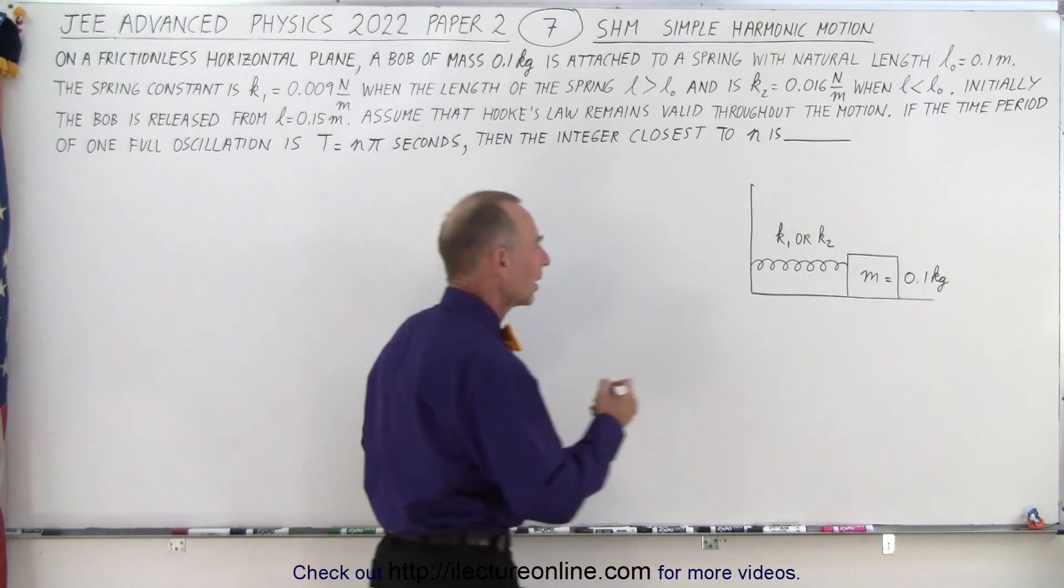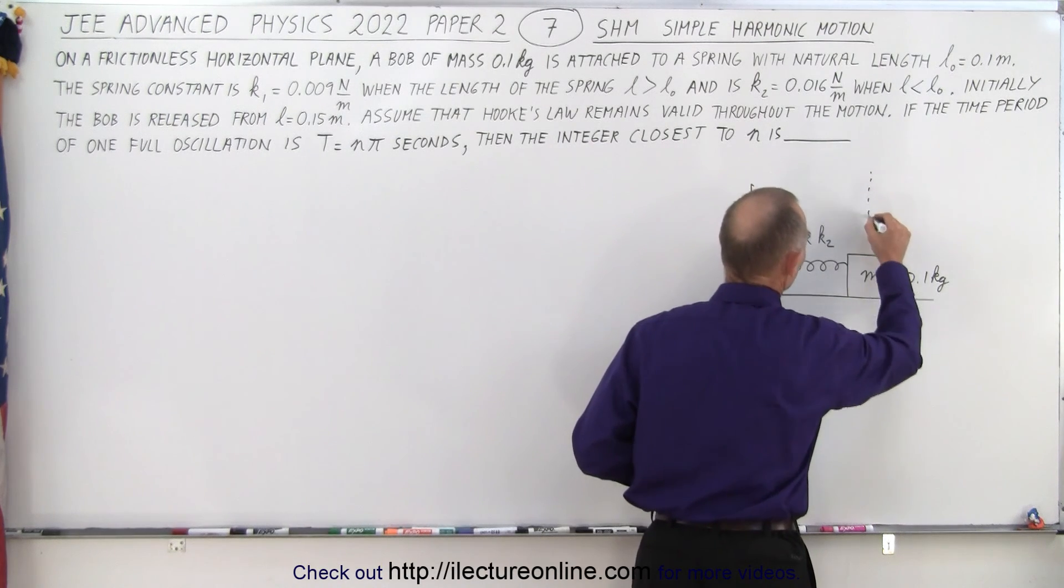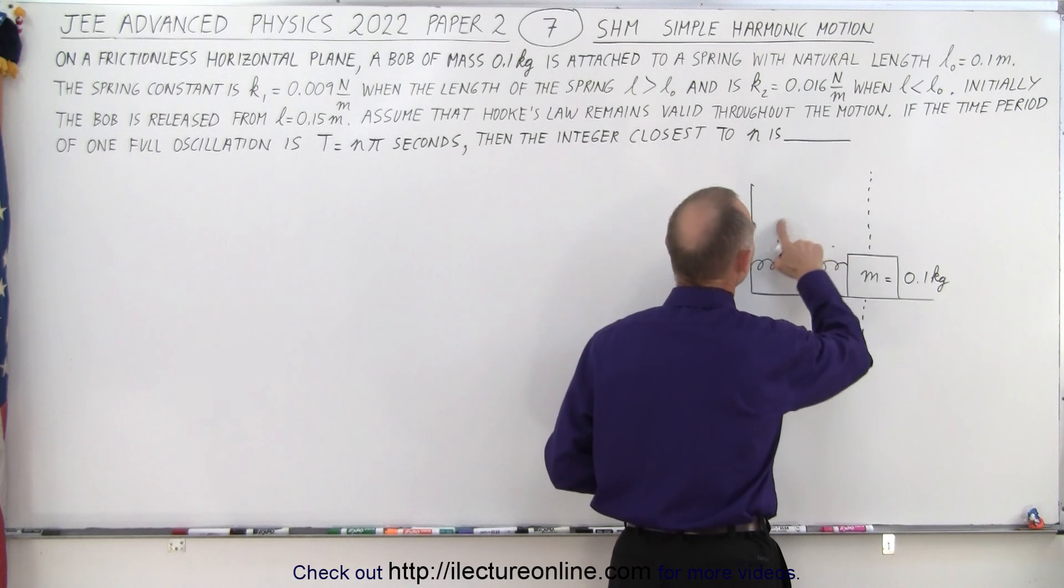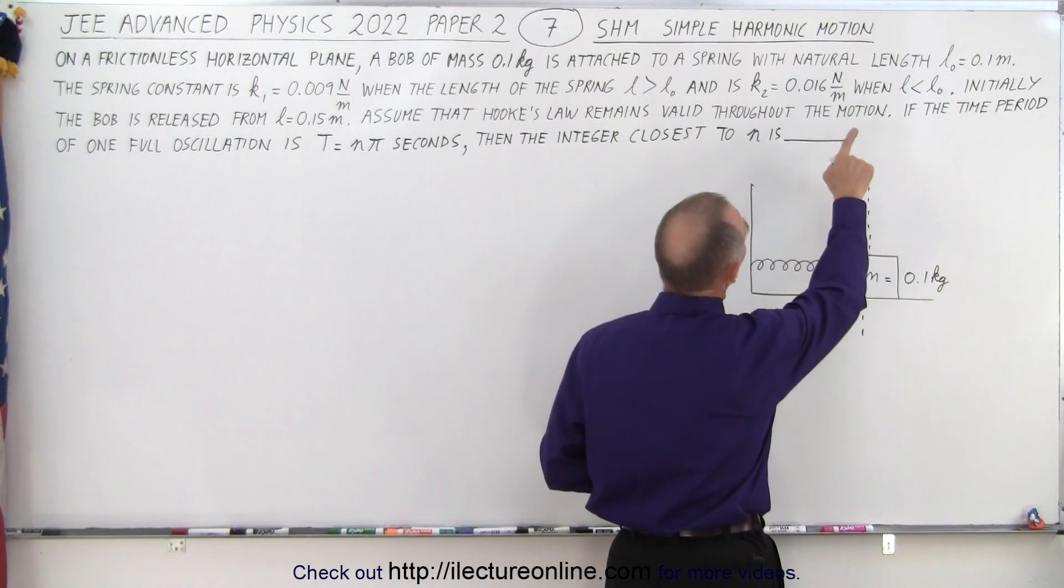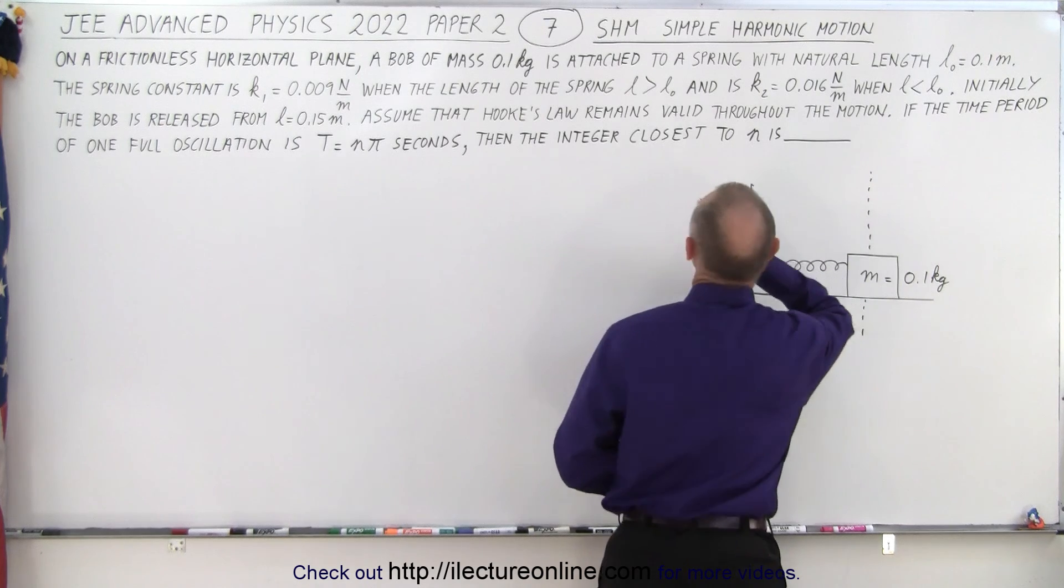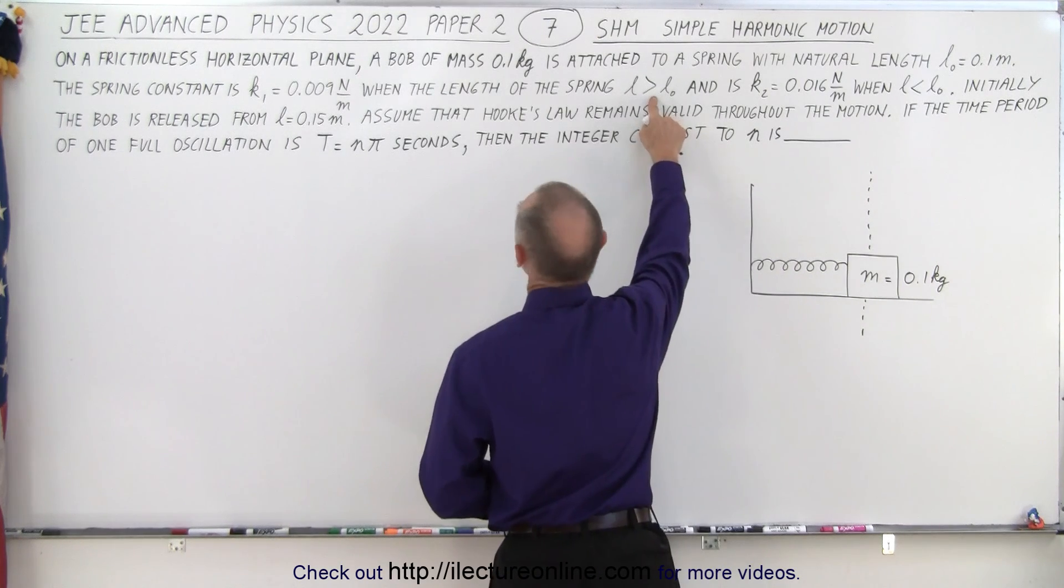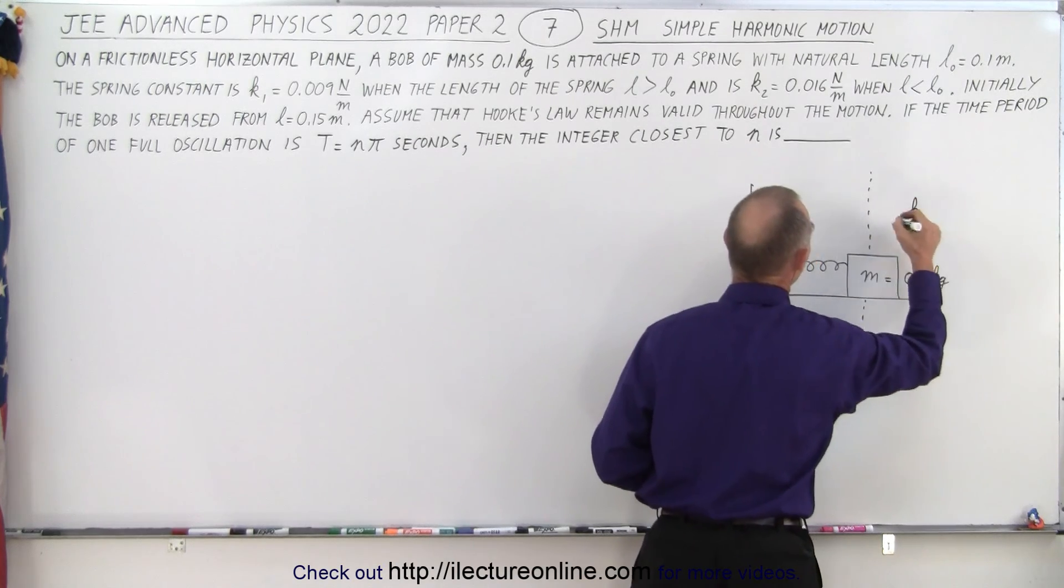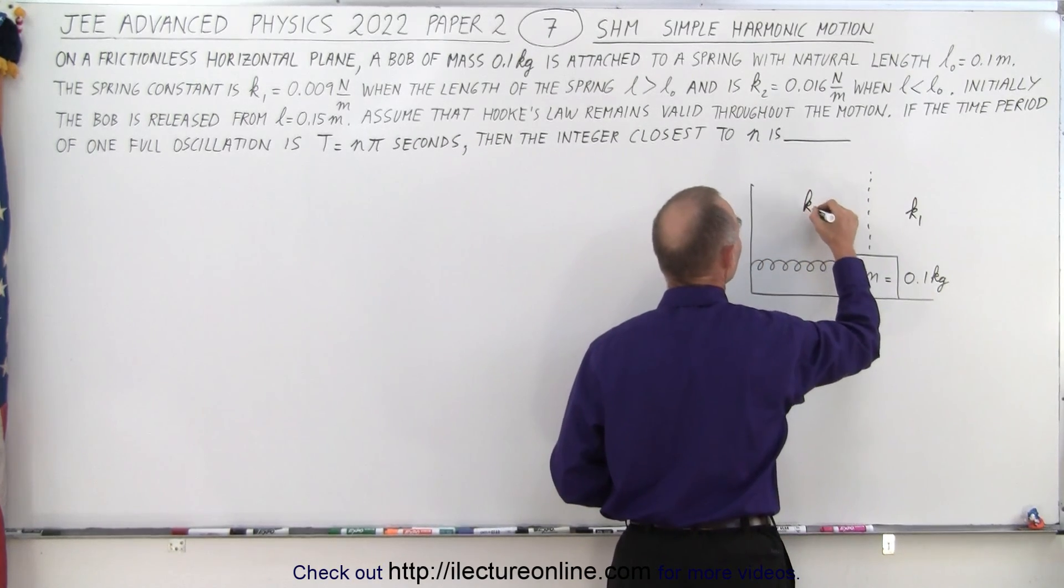Well we can kind of cut the thing in two. When the spring is longer than l sub knot then the spring constant is k1. So on this side the spring constant is k1, when it's compressed on this side it's k2.